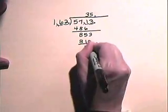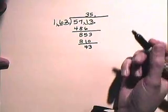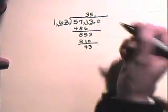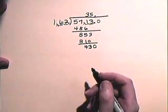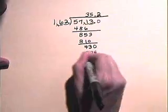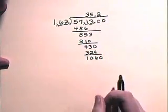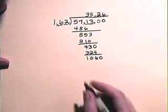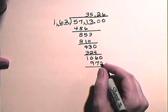853 subtract 810 is 43. And now we add the number of zeros that are necessary until we either have no remainder or we reach the desired degree of accuracy. So we add a zero and we divide. We see that 162 divides into 430, 2 times. Multiplying, that gives us 324. We subtract, that gives us 106, adding another zero. So 162 divided into 1060 divides 6 times. We multiply, that gives us 972. We subtract, that gives us 88.